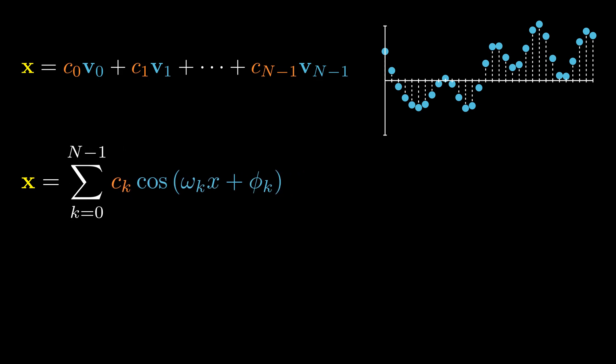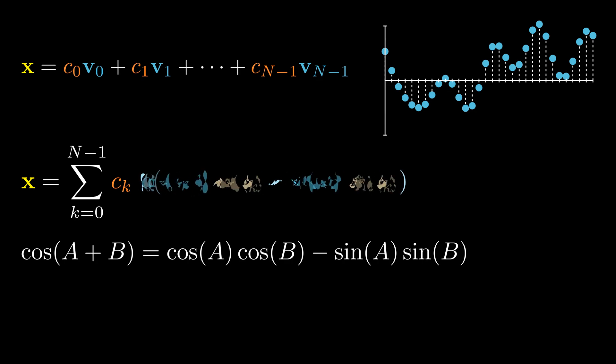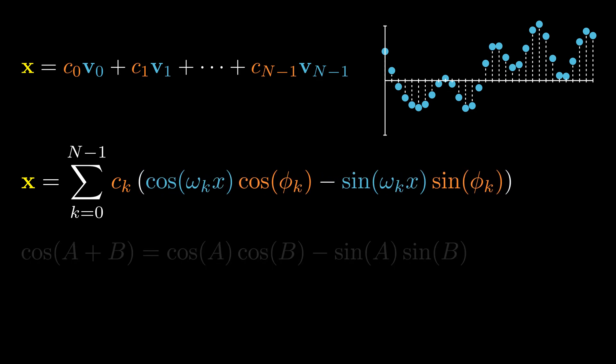Before we compute the coefficient ck, we need to have fixed basis vectors. But here is the catch, the phase shift depends on the data. So we need to decouple them. Luckily, we can turn to the cosine addition formula from high school. It says that cosine a plus b equals to cosine a times cosine b minus sine a times sine b. Applying this formula, we get this expression.